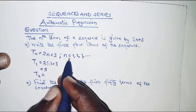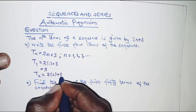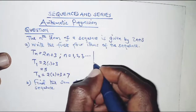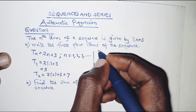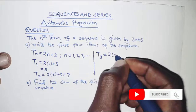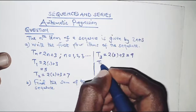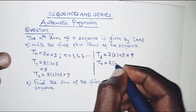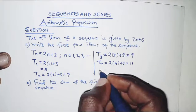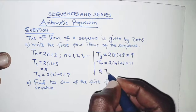For the second term, n is 2, so we have 2 times 2 plus 3, which gives 7. For the third term, n is 3, so 2 times 3 plus 3 gives 9. Finally, the fourth term: 2 times 4 plus 3 gives 11. So the first four terms are 5, 7, 9, and 11.